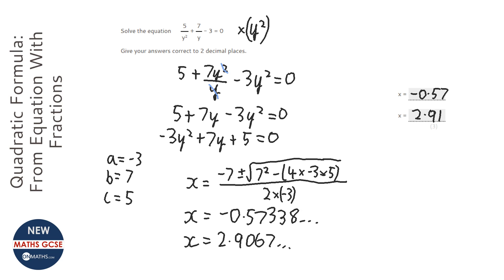And so the trick with this is just to convert it into the form something y squared plus something y plus something equals 0.